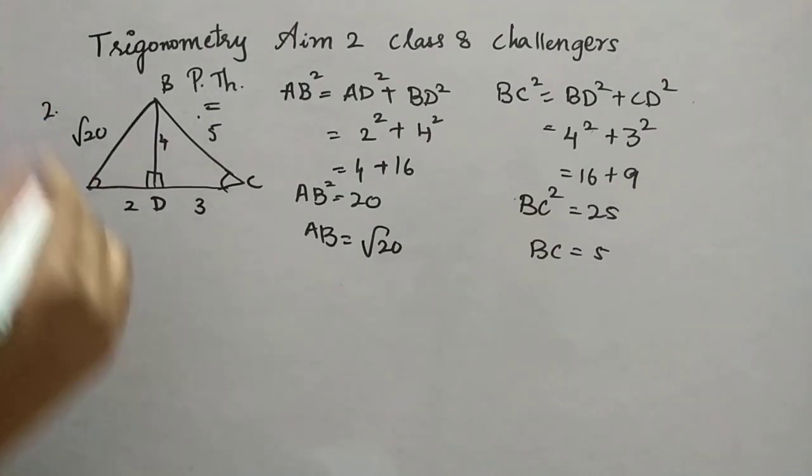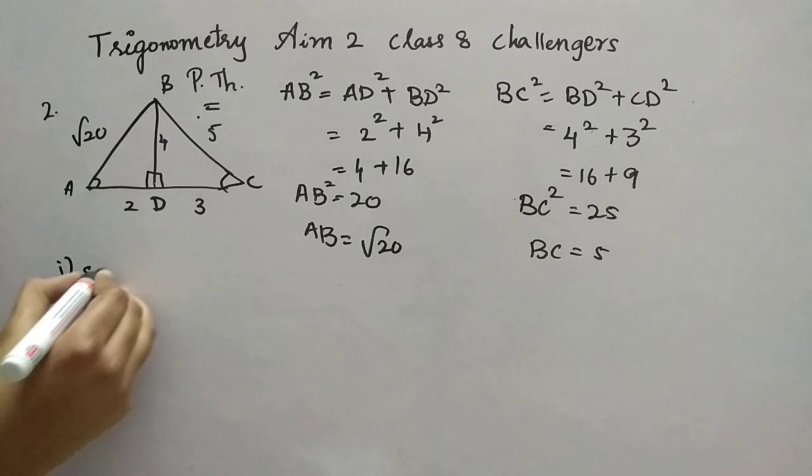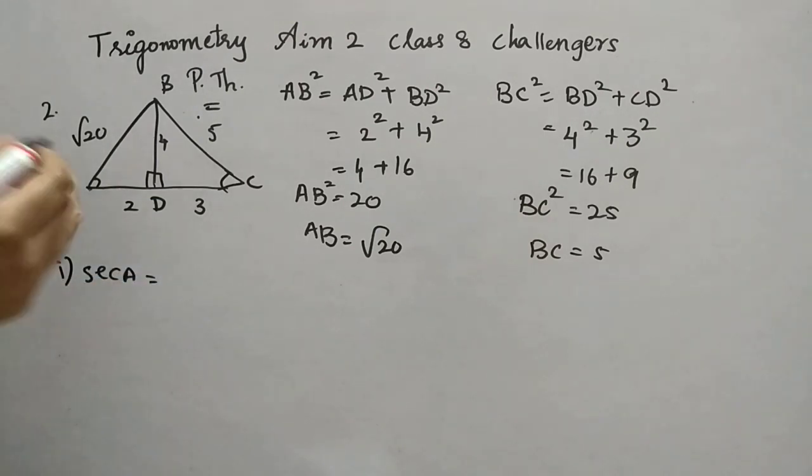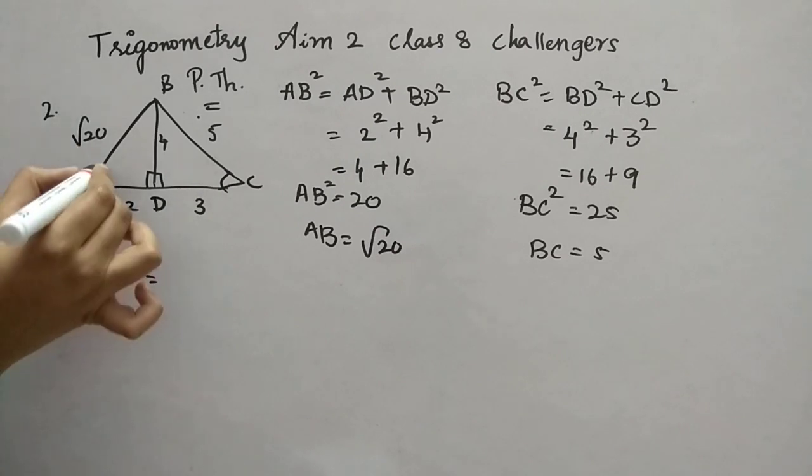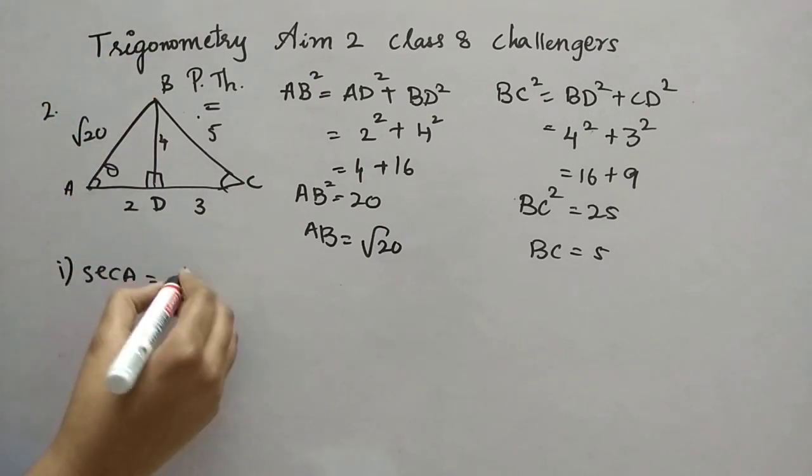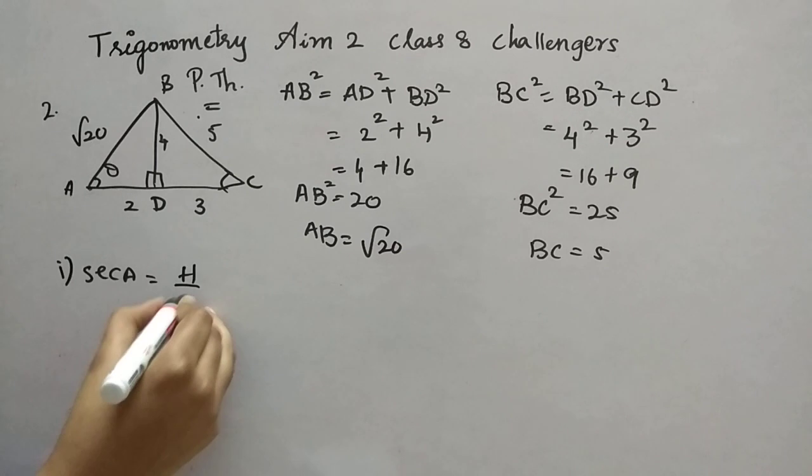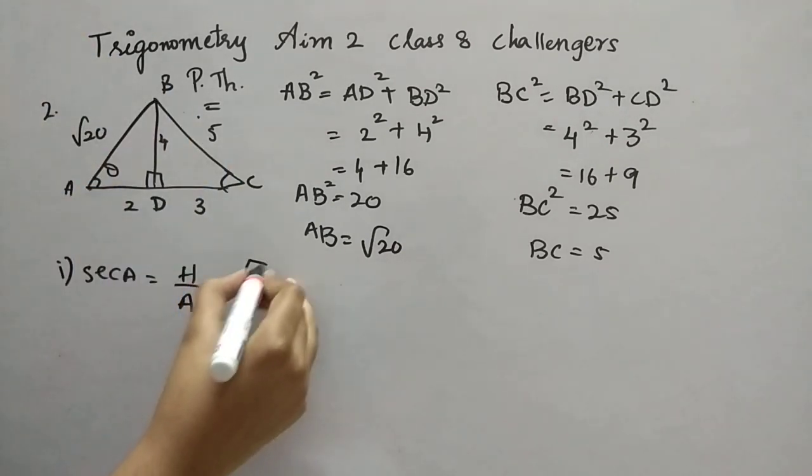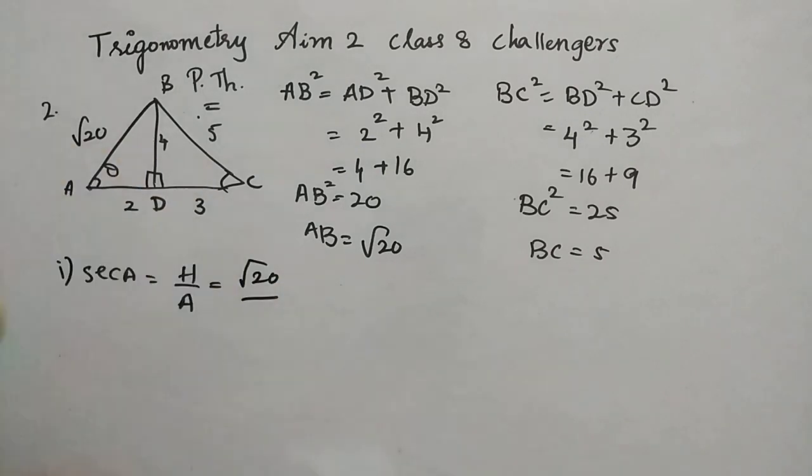Now let's continue with the solution. First, secant A, right? Secant A in the sense, like this is A, right? So from this point of theta, we have to find this. So from this triangle, only from this triangle, we have to find. So first, secant A is nothing but hypotenuse by adjacent. That is root 20. Hypotenuse is root 20. Divided by adjacent is 2.